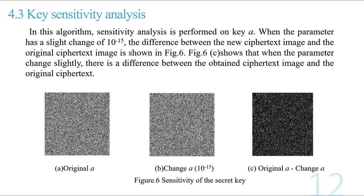Key sensitivity analysis: In this algorithm, sensitivity analysis is performed on parameter A. When the parameter has a slight change of 10^(-15), the difference between the new decrypted image and the original decrypted image is shown in Figure 6. Figure 6 shows that when the parameter changes slightly, there is a visible difference between the obtained decrypted image and the original decrypted image.